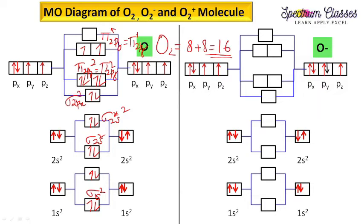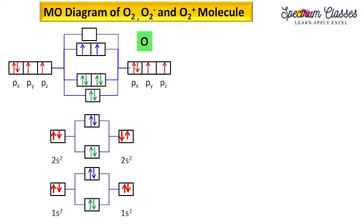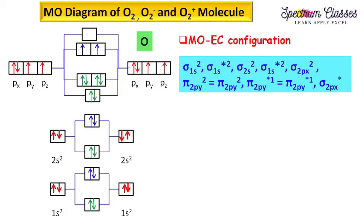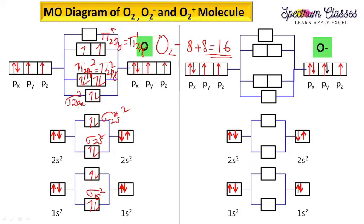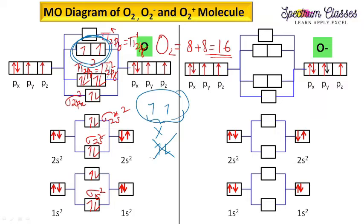The electronic configuration of the oxygen molecule is written in the increasing order of energy. Coming to the magnetic properties — here I have shown 2 unpaired electrons. These are counted as unpaired electrons. You cannot say these 2 unpaired electrons will get paired — that is totally incorrect. So 2 unpaired electrons are there; therefore, it is paramagnetic in nature.